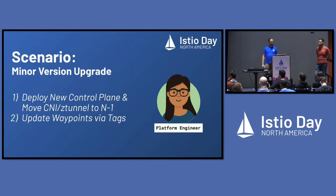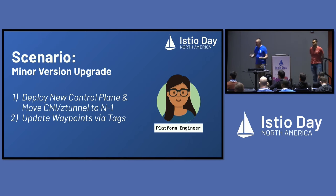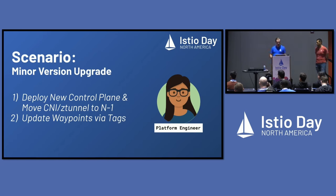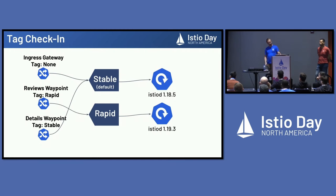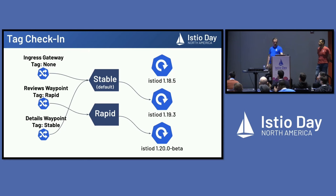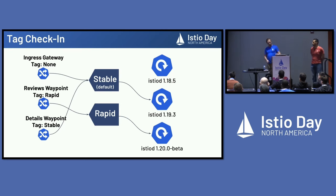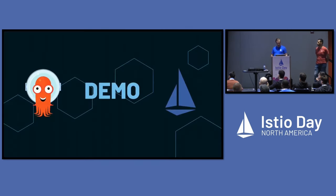We want to do a full minor version upgrade — this is the one that everybody struggles with. We're going to do it in two pull requests. In the first, we're going to deploy the 1.20 beta control plane and move our tags up to Istio 1.19 and 1.20. We're taking our CNI from 1.18.3 to 1.19, the bug fix moves to 1.19.3, and we add our 1.20 control plane. Still our largest change so far at about four lines.